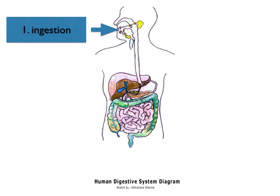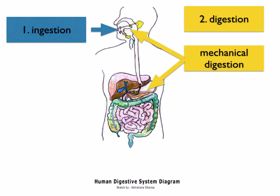Ingestion is when the food is taken in at the mouth, chewed and swallowed. Digestion is when you have large complex molecules broken down into small soluble ones. You've got mechanical and chemical digestion. Mechanical digestion is when the food is physically broken down — for example, the teeth and the tongue break down the food in the mouth and the stomach helps to churn the food around. Bile is also involved in mechanical digestion; it emulsifies fat, which we'll look at in a little bit.